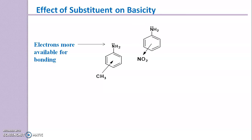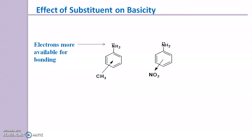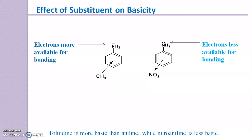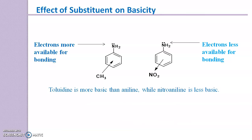Whereas in the case of nitroaniline, the electrons are less available for bonding. Therefore, we can say that Toluidine is more basic than aniline, while nitroaniline is less basic.